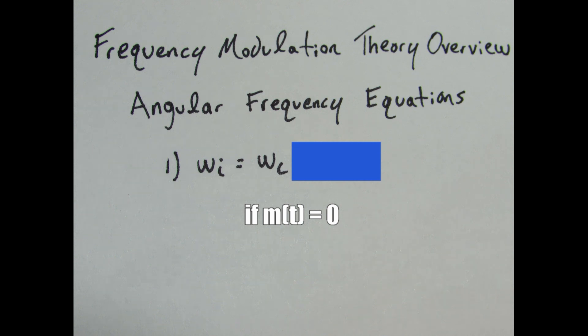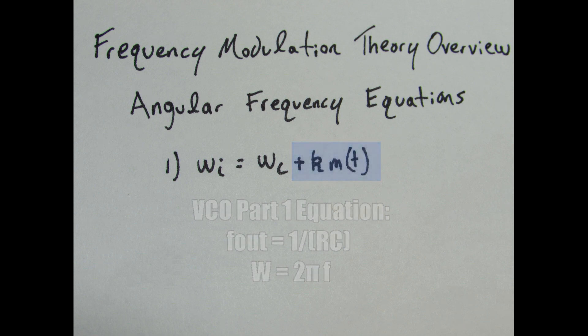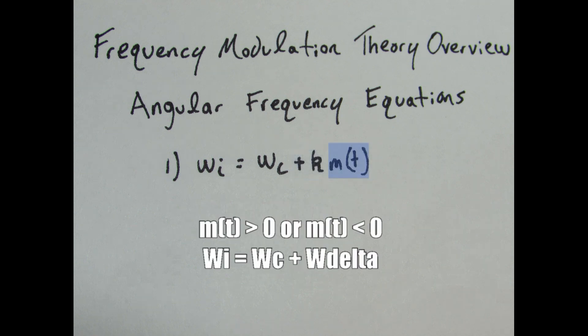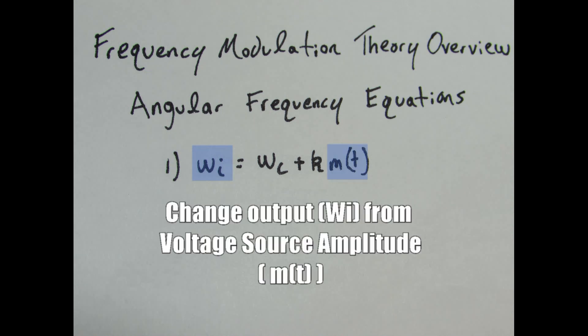This case explains what we went over in part one, where the output frequency is dependent on the resistor and the capacitor value. If the message signal MT's amplitude is either greater or less than zero, then we get a change from the angular frequency carry, omega c. This results in a change in the instantaneous output frequency. This is how we control the output frequency from the amplitude of the message signal.